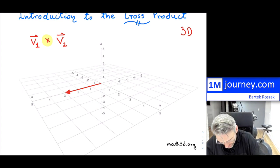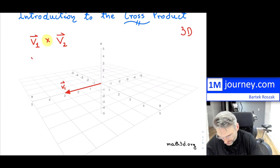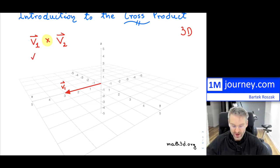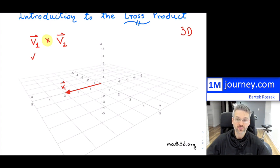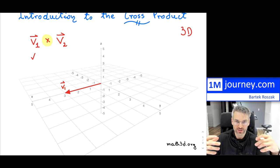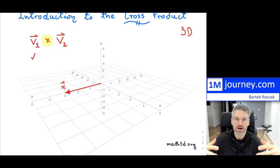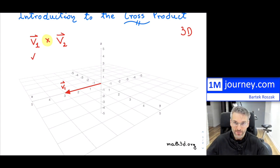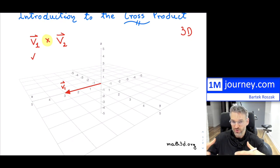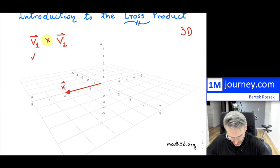Then I'm going to draw my V2 vector. V2 can be anywhere, and so can V1. Initially you may want to visualize them in the x and y directions, and from there you can see what the cross product actually does. We can do other examples to be able to view this.